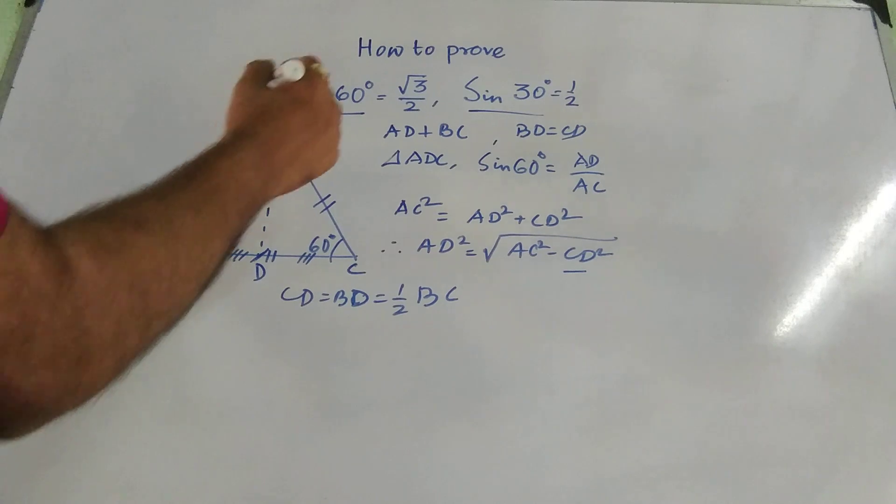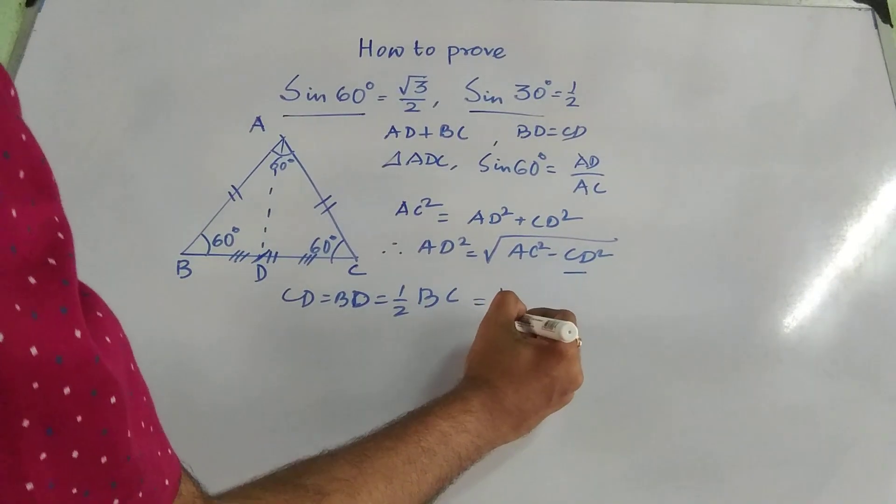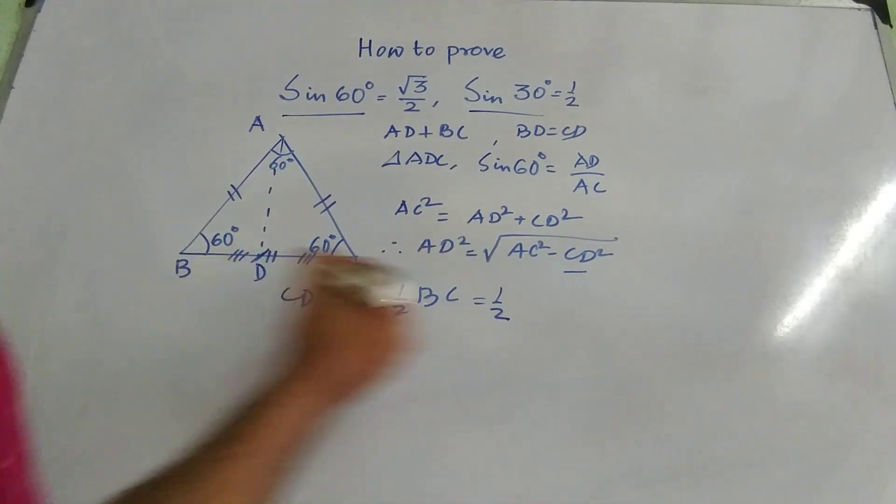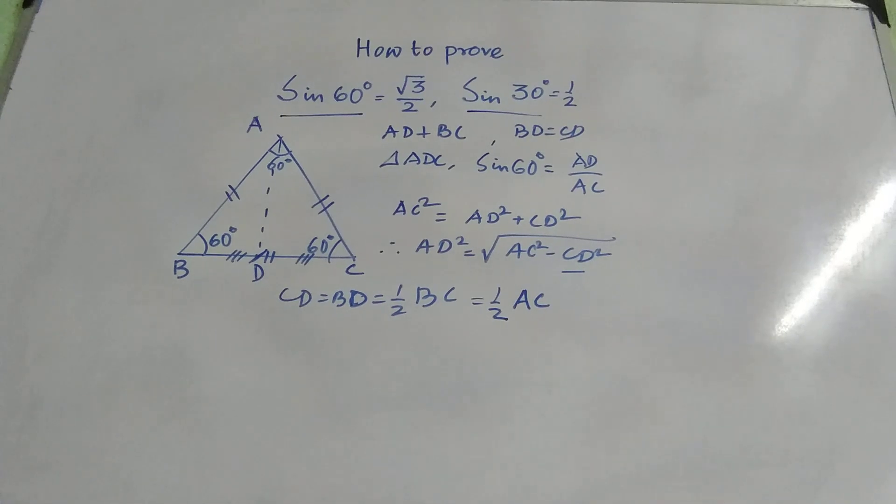So BC equal to AC equal to AB, since this is an equilateral triangle, so it can be written as half of the other side, it can be written as half of AC.